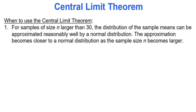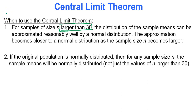When should you use the central limit theorem? Ideally it is used for samples of size n larger than 30. That's the magic number where our distribution of sample means becomes clearly normal. Additionally, if the original population is normally distributed, then for any sample size n the sample means will be normally distributed — not just for values of n larger than 30.